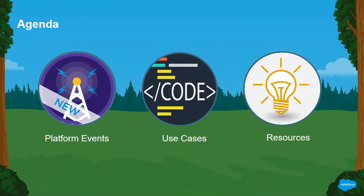The agenda for today: we are going to see what platform events are, how they are different from the publisher-subscriber models like Streaming API which you would have known of. Then use cases of programmatic approaches — how easy it is to define, subscribe, as well as publish those events. And finally, you should be able to walk away with code samples that you yourself can start using in your organization.